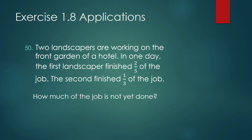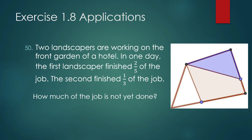Two landscapers are working on the front garden of a hotel. In one day, the first landscaper finished two-fifths of the job and the second finished one-third of the job. How much of the job is not yet done? Let us say this polygon represents the front garden of the hotel. The first landscaper finished two-fifths and the second finished one-third of the job.